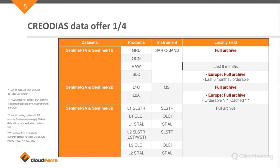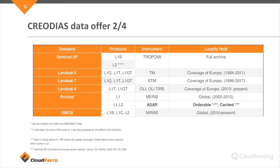We have the Copernicus Sentinel mission data — starting from the radar Sentinel-1, then Sentinel-2 and Sentinel-3. Sentinel has different resolutions; the bands are divided so you can choose whether you are processing data at 10, 20, or 60 meter resolution. We have the full archive of Sentinel data and the data are really up to date at all times. We also have Sentinel-5P for atmospheric purposes, and data from the Landsat satellite going back to 1984.